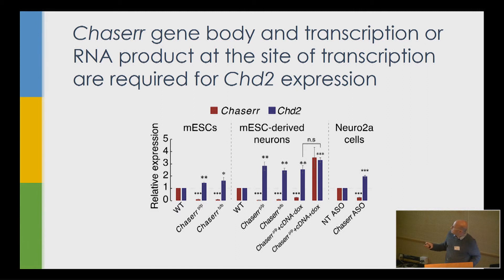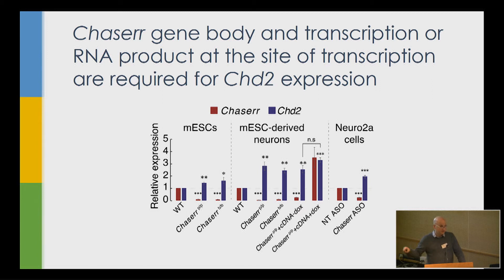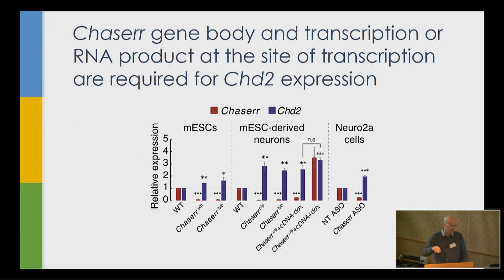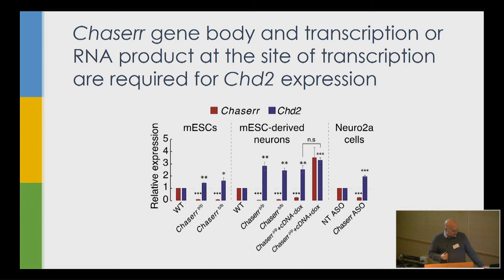If we differentiate mouse embryonic stem cells into neurons, we still see this increase in CHD2. We then asked whether providing Chaser RNA exogenously — introducing a lentivirus expressing Chaser from a different place in the genome — could rescue and reduce CHD2 levels. It does not, suggesting Chaser acts in cis. Using antisense oligos to knock down Chaser RNA levels also produces this effect in MEFs, N2A cells, and human cells, suggesting the RNA product, or at least the act of transcription, is important — not just the DNA of the Chaser locus.